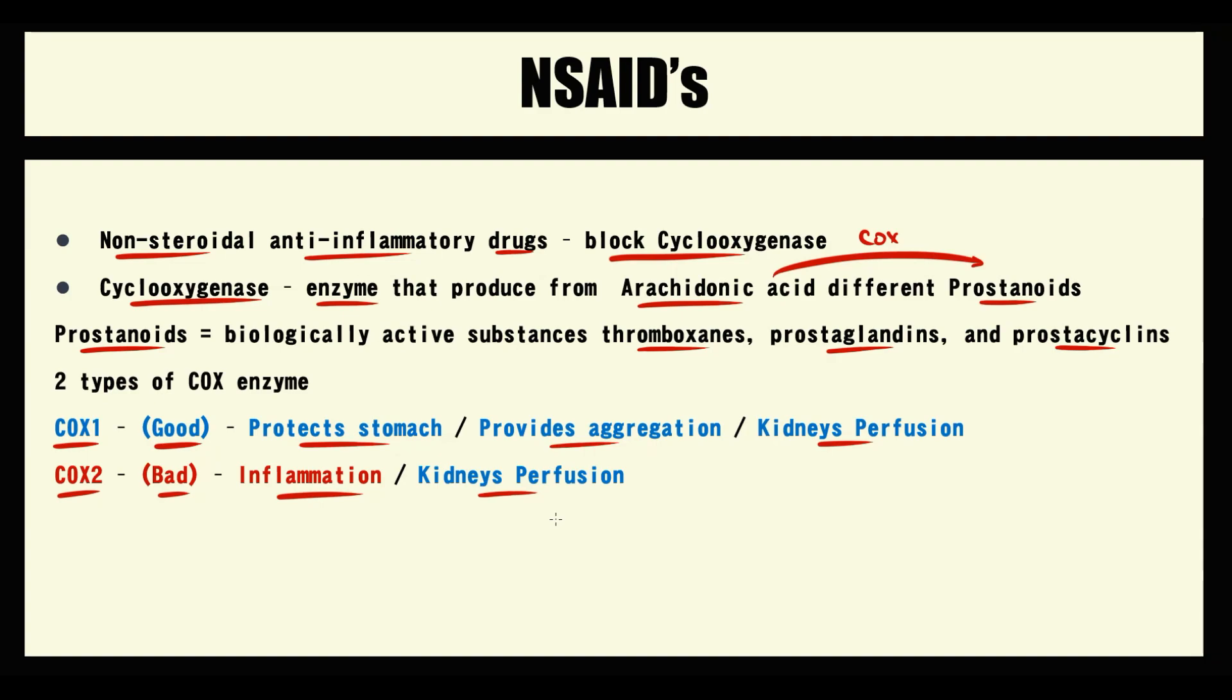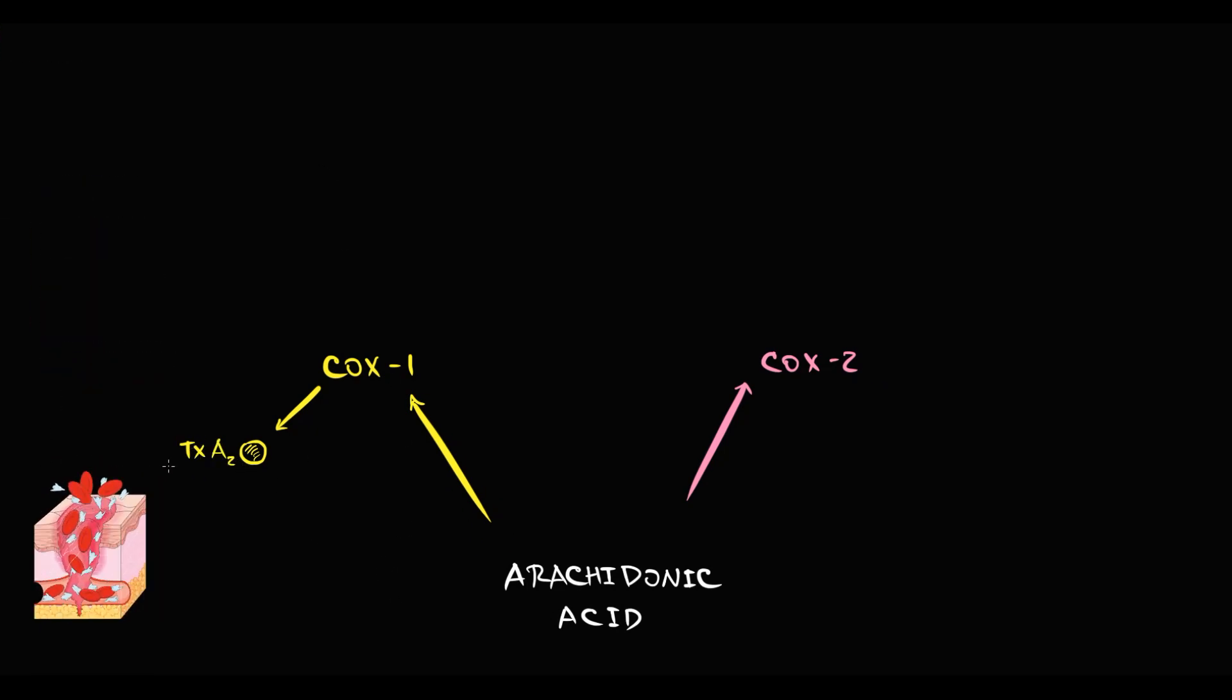To explain the difference between non-steroidal anti-inflammatory drugs, we have to note the sites of action of COX-1 and COX-2 enzymes. From arachidonic acid, COX-1 enzyme produces thromboxane A2. Thromboxane A2 provides aggregation of thrombocytes, which is an essential step in primary hemostasis.